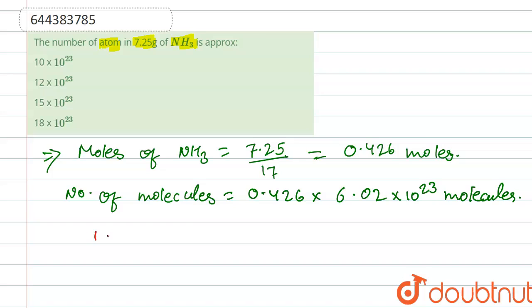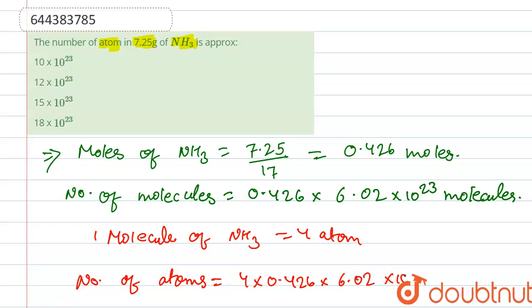And we know that one molecule of NH3 contains four atoms. So number of atoms will be 4 times 0.426 times 6.02 times 10 to the power 23.